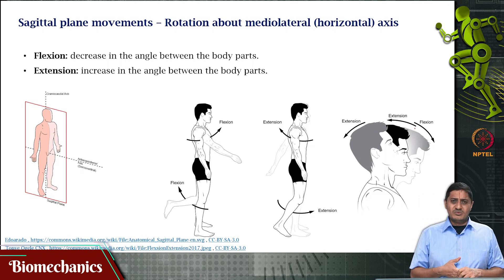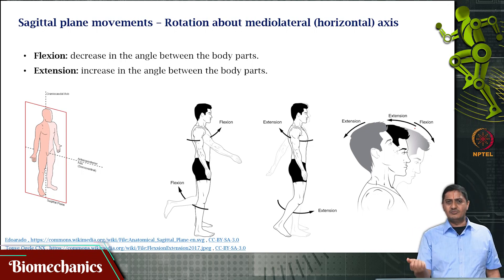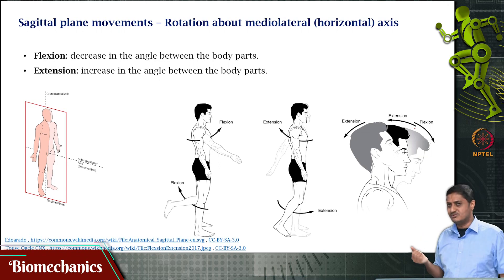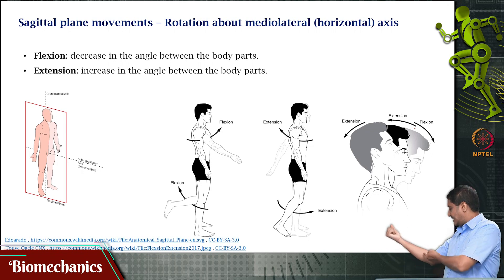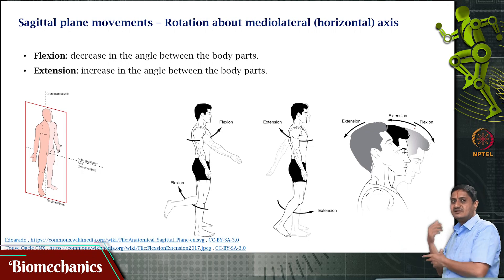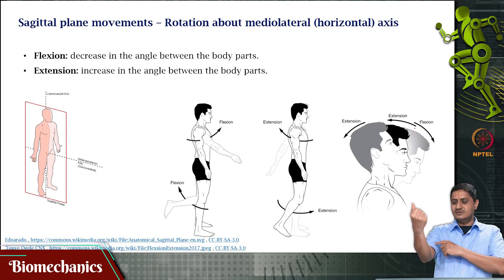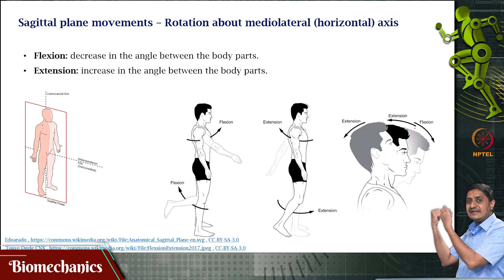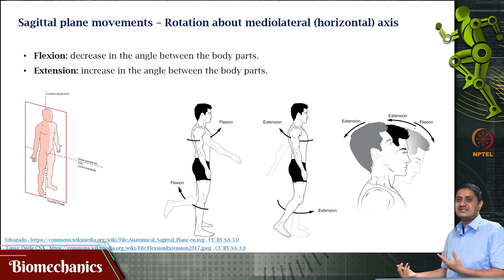One such movement is flexion. I am having my elbow like this and I am closing my elbow. This is a decrease in the angle between my humerus and the radius. When that angle decreases, it is called flexion. Now, I am keeping my arm like this and opening it up — this angle is increasing. This increase in the angle is called extension.